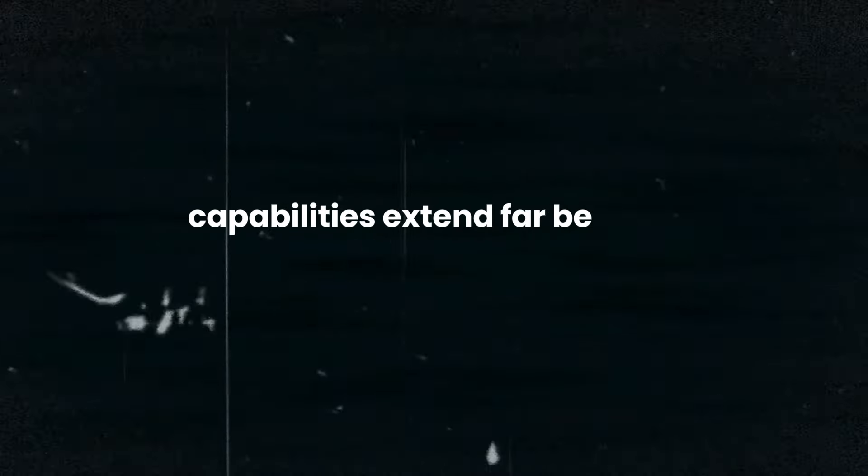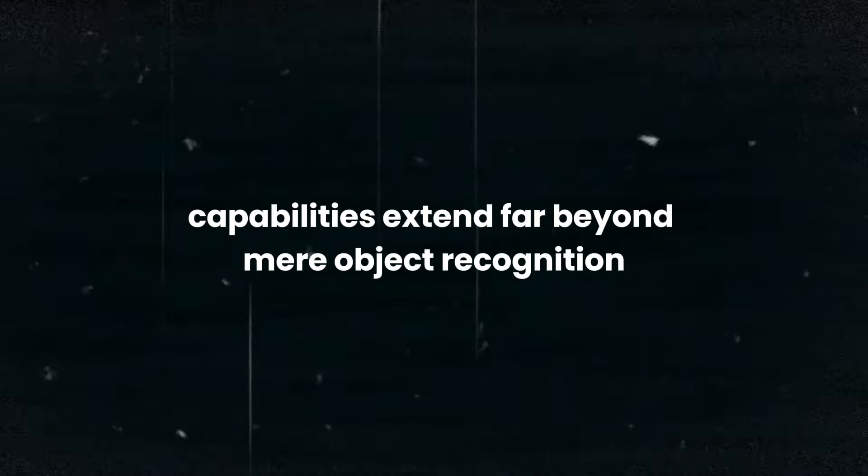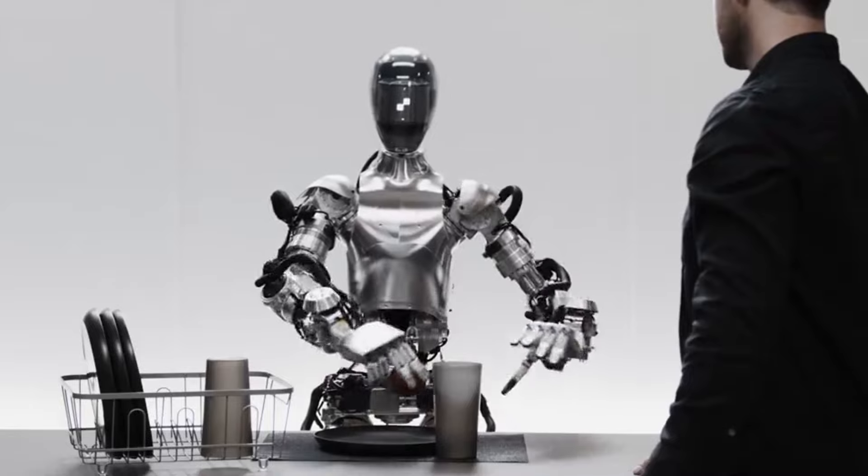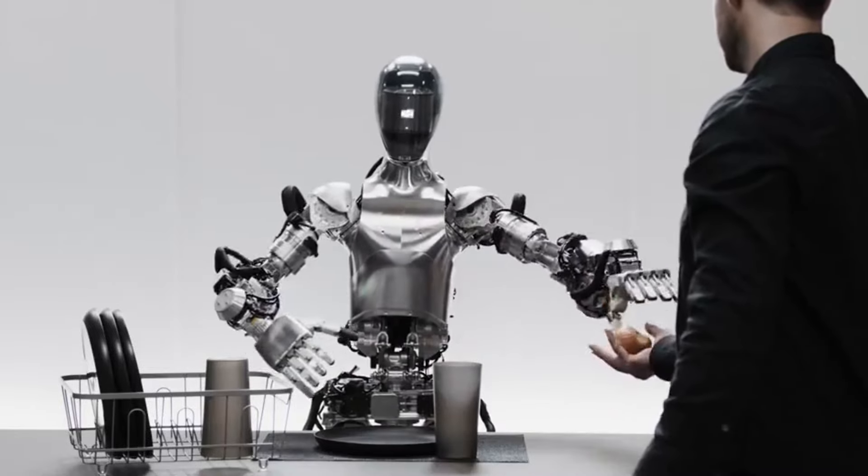But the robot's capabilities extend far beyond mere object recognition. When asked if it can provide something to eat, the robot demonstrates a level of contextual understanding that is truly groundbreaking. It identifies that the apple is the only edible item on the table and carefully picks it up, handing it over to the person making the request.